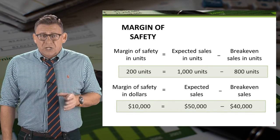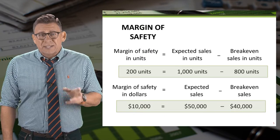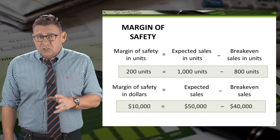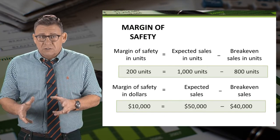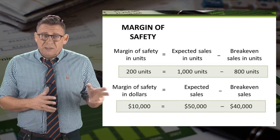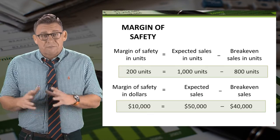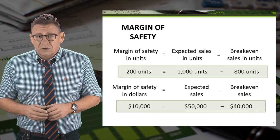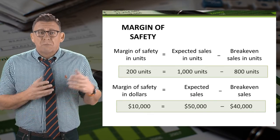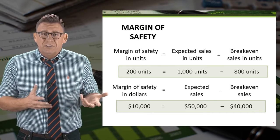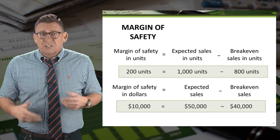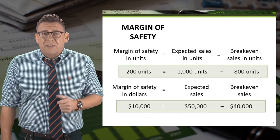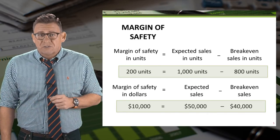Additionally, expected sales dollars are $50,000, break-even sales dollars are $40,000, so the margin of safety in sales dollars is $10,000 of sales revenue.